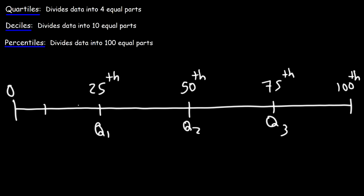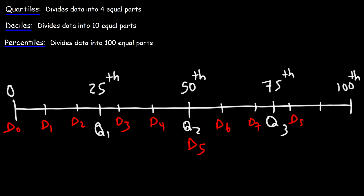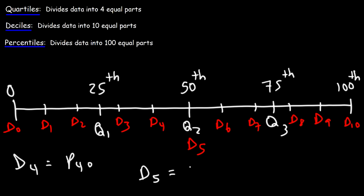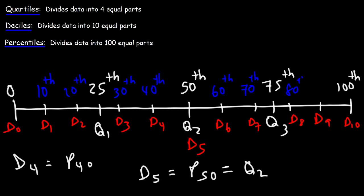Let's break this data into 10 equal parts. We have D1, D2, D3, D4, and Q2 is the same as D5. Then D6, D7, D8, D9, and D10. D4 represents the 40th percentile. D5 is the 50th percentile, which is the same as the second quartile. D1 is the 10th percentile, D2 is the 20th, D3 is the 30th, D4 is the 40th, D6 is the 60th, and D9 will be the 90th percentile.